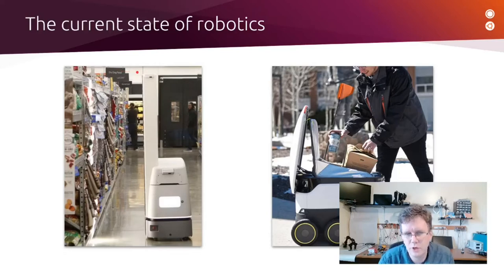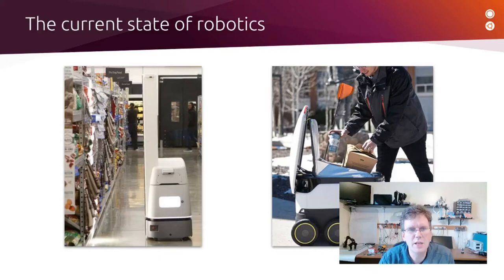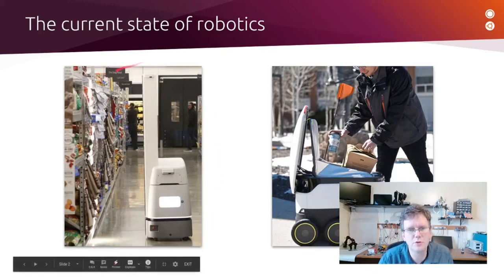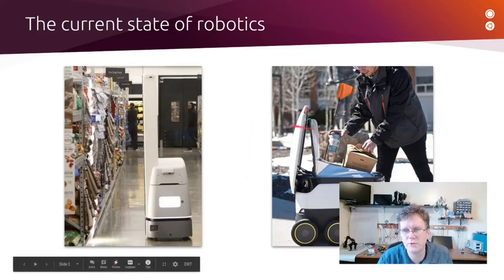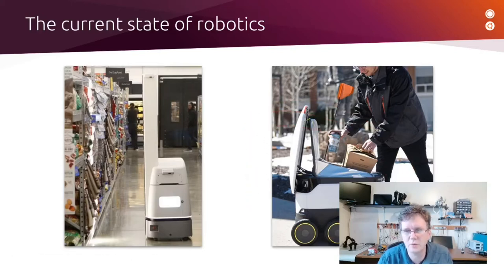Whereas before, industrial robots would be on their own separate network and behind a physical barrier to protect people's safety. Now we see them wandering around supermarket shelves alongside customers, doing tasks like inventorying shelves, and delivering food to college students and folks in urban areas.